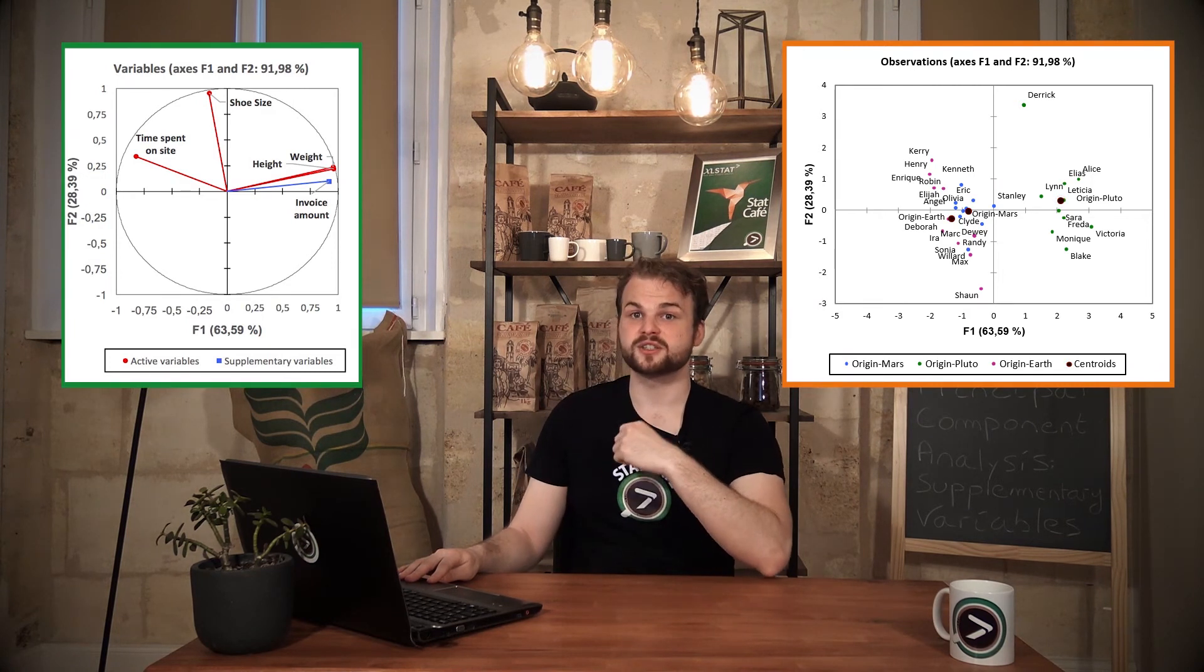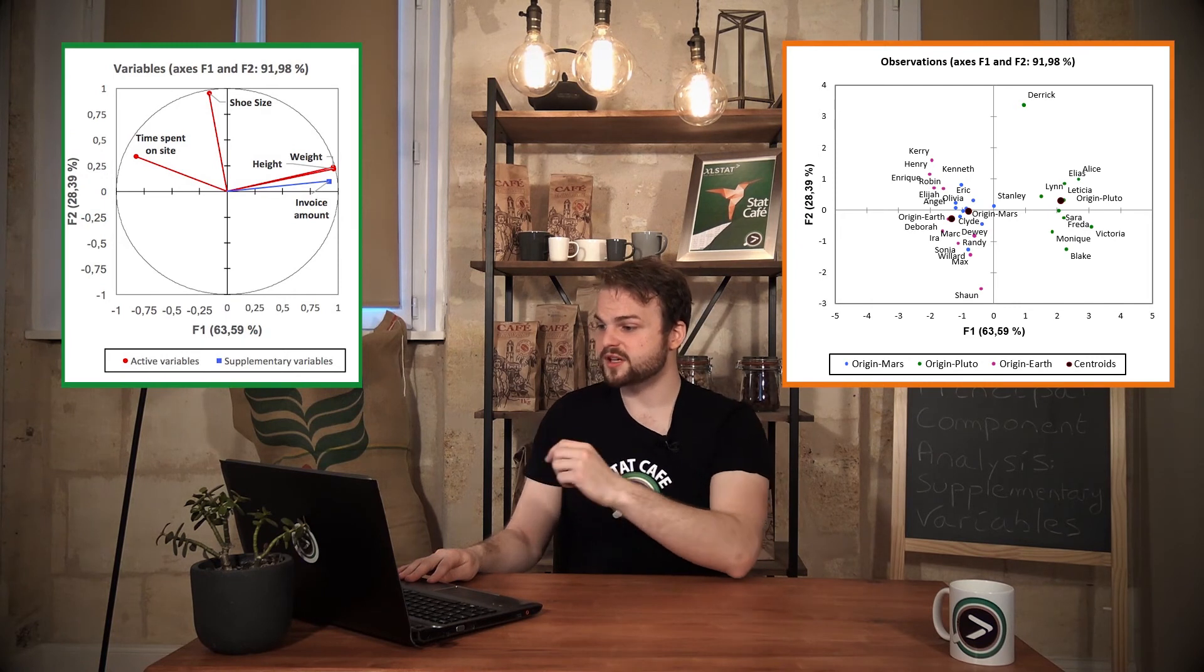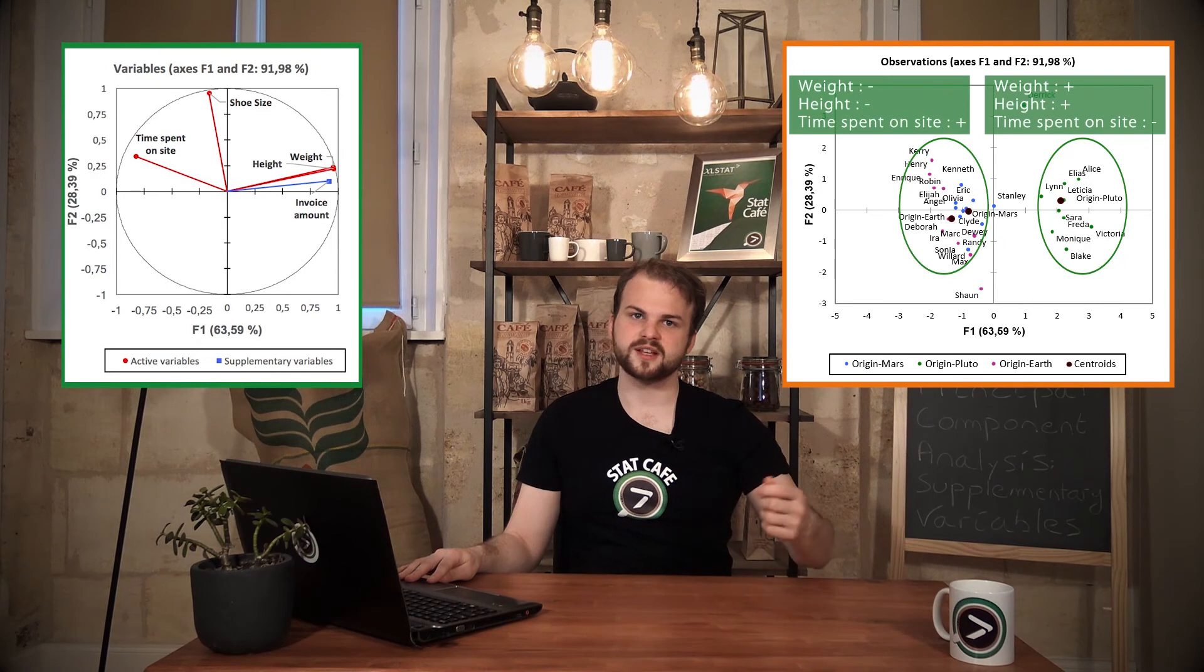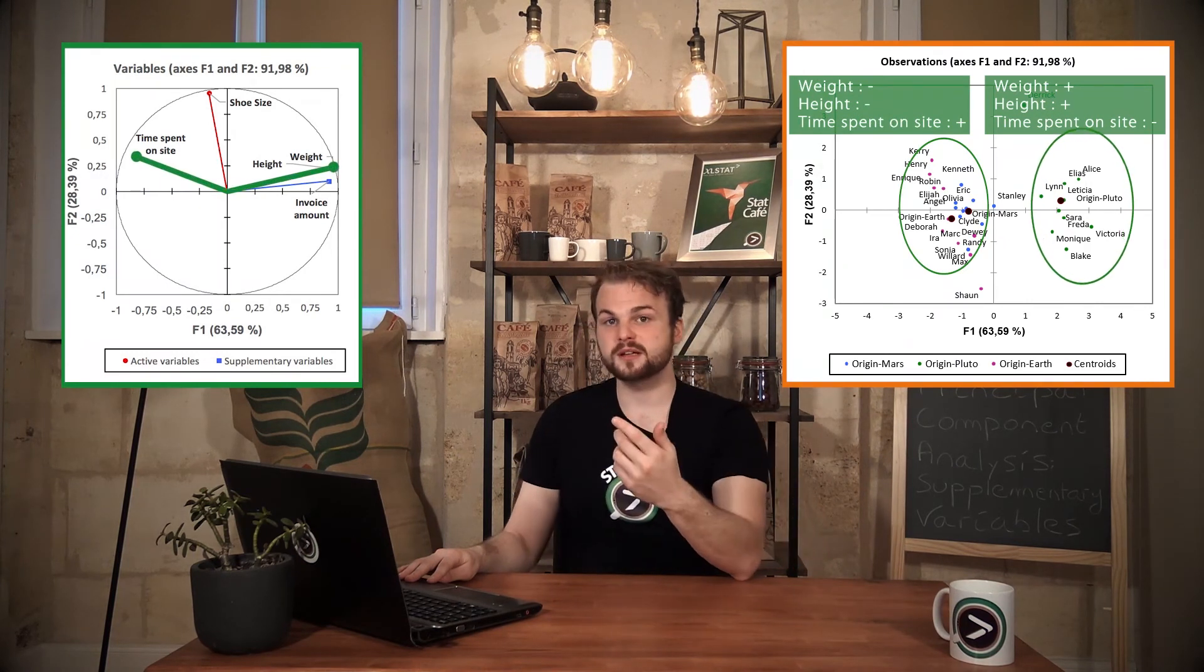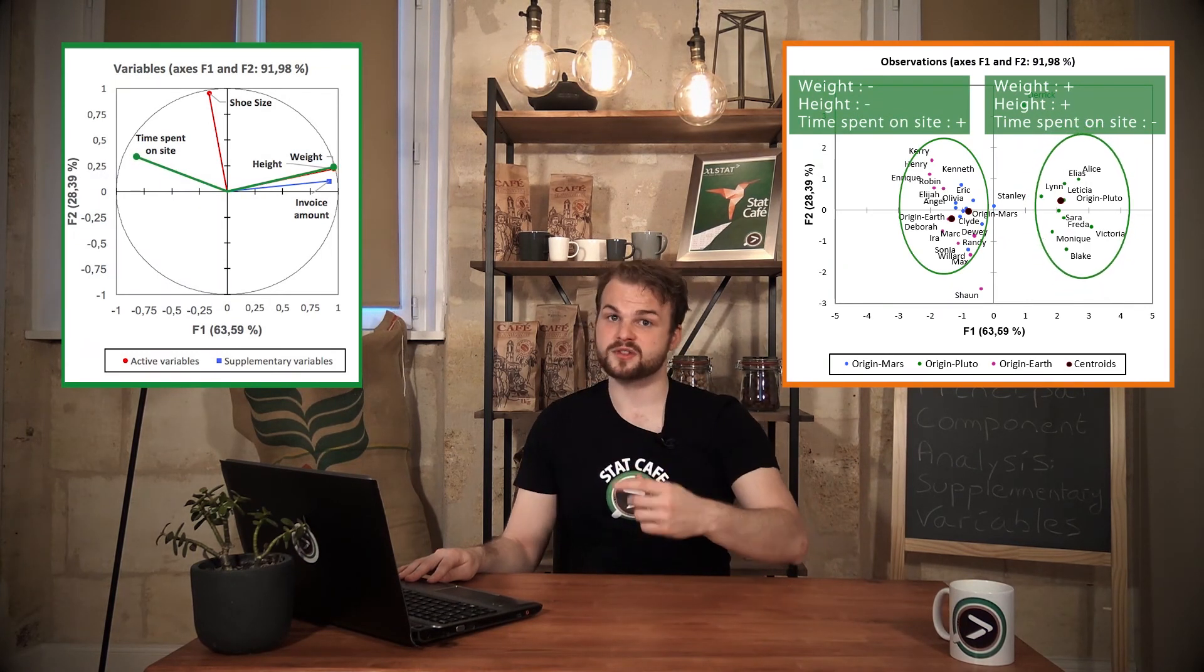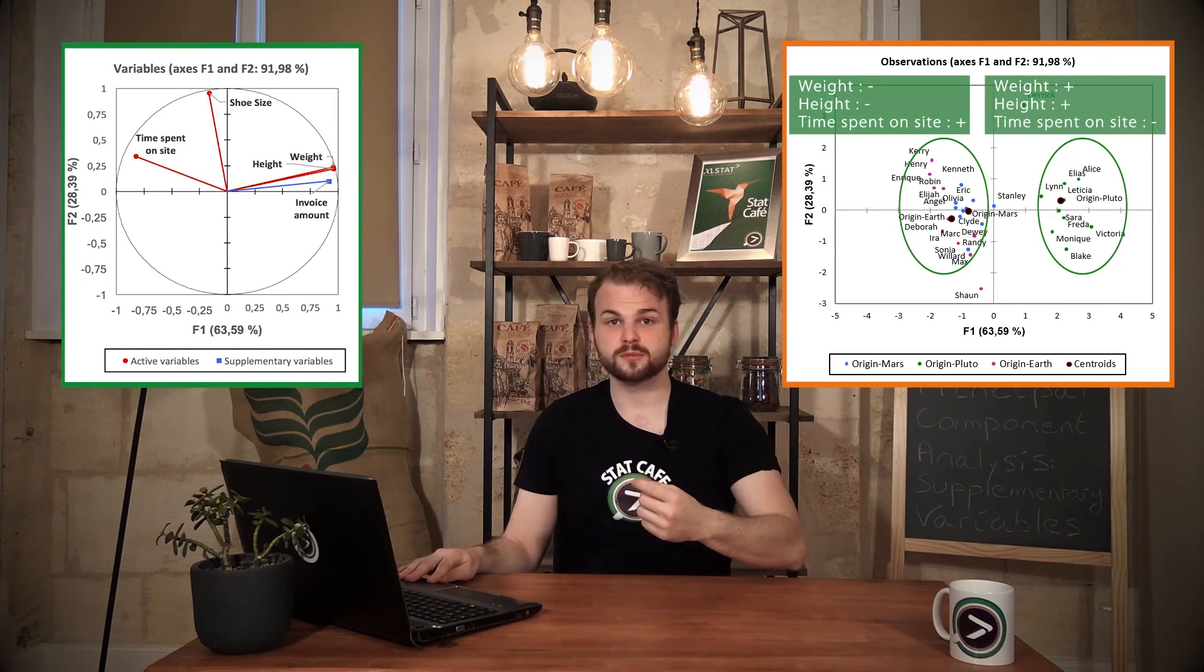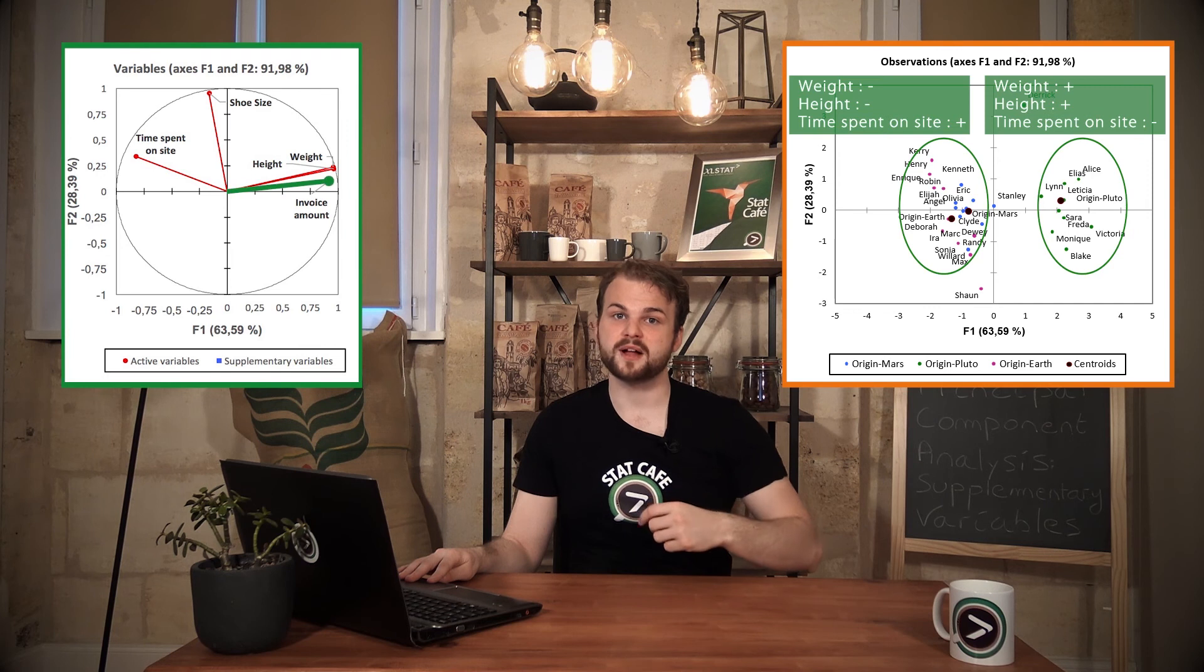Now here is some interpretation. There is a clear separation between Pluto on the right and Mars and Earth on the left. Plutonians are bigger and spend less time than the others on the website. Moreover, Plutonians form a group of customers that tends to spend higher amounts than the others.